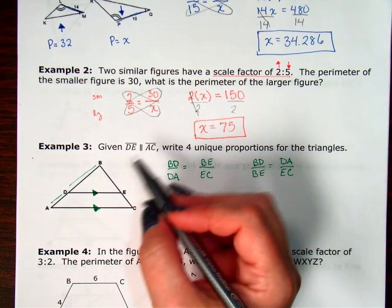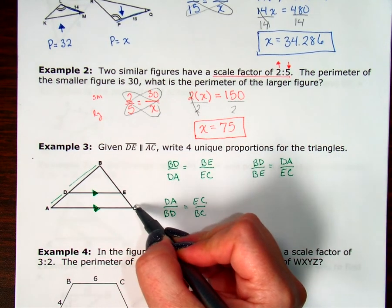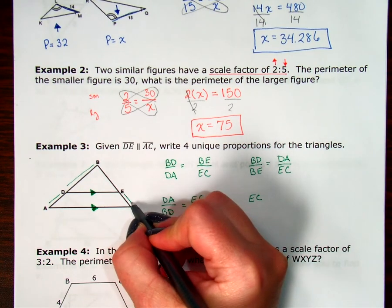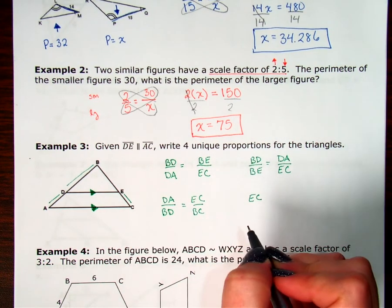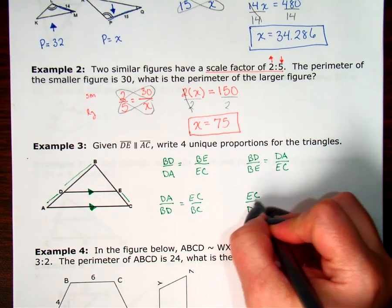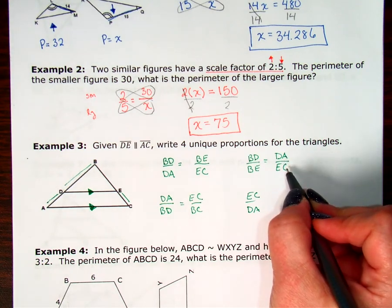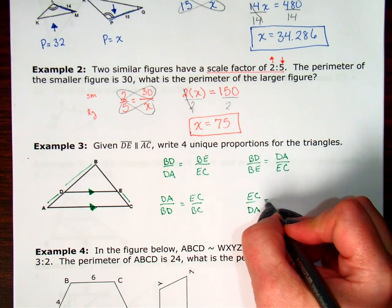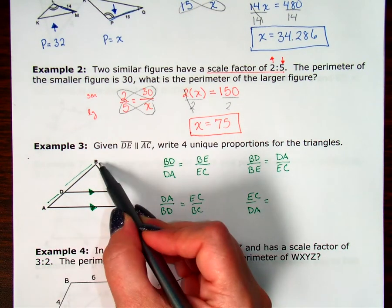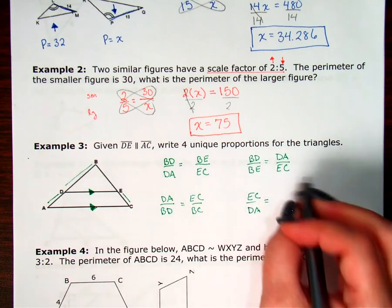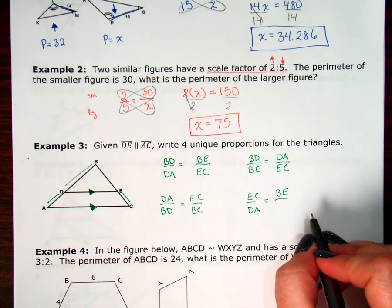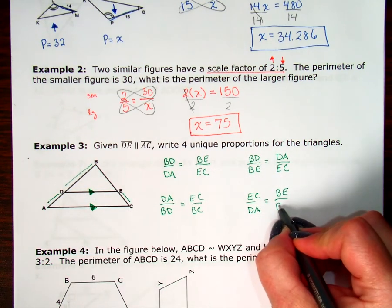I could switch those. I could do... Let's do the bottom EC. So the bottom right to the bottom left, DA. So I'm kind of taking the reciprocal of my second fraction over here, which means it's going to equal the reciprocal of that fraction there. So if I did bottom right, bottom left, then I'm going to go top right, top left. BE over BD.